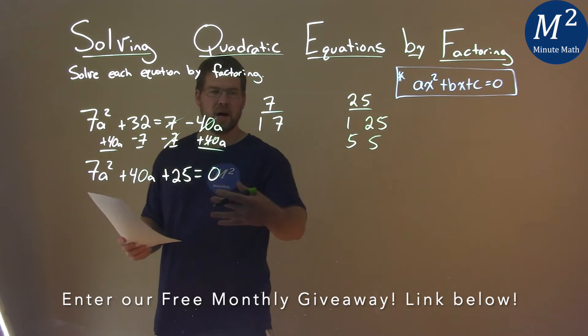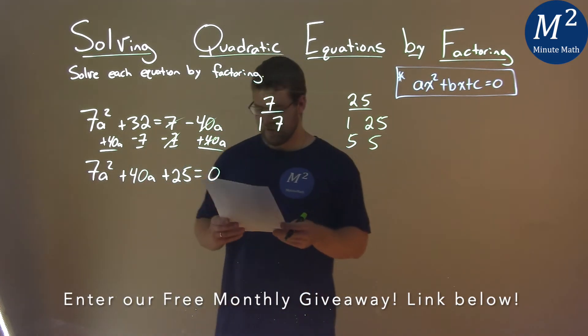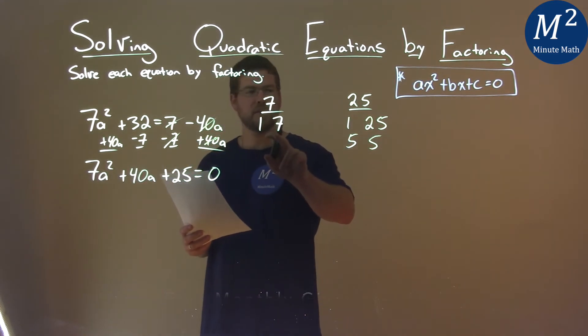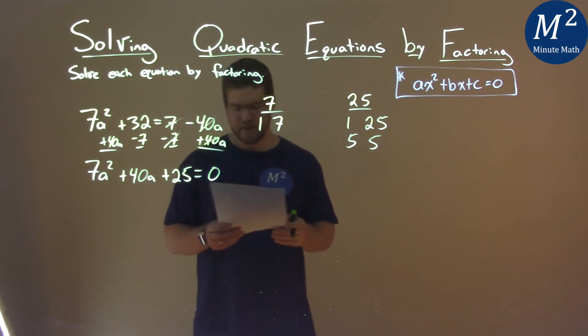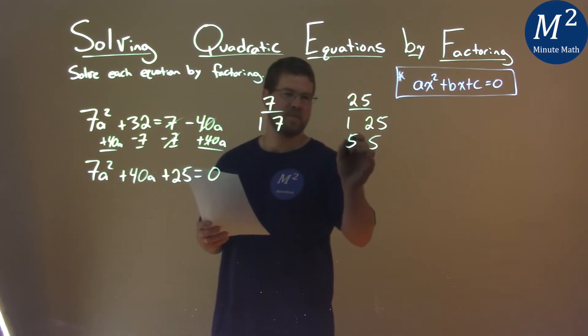Now luckily, all of our values are positive, so we're working with positive numbers here. I have to ask myself: 7 times which number within a pair plus 1 times the other number gets us a positive 40? My first guess is the 5s here.